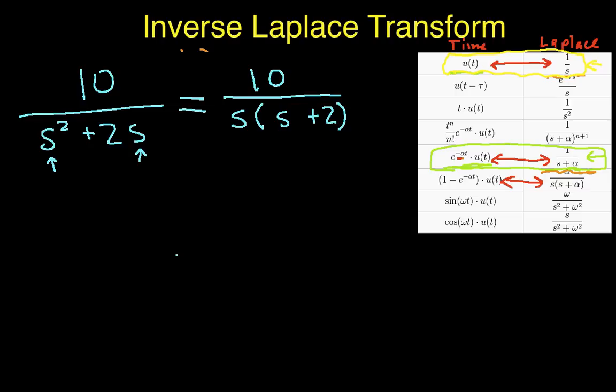I go look at my table and I can see that I have this guy, which is alpha over s times s plus alpha. Well, I might be able to get this expression to look like that. I need to have something that looks like 2 over s times s plus 2.